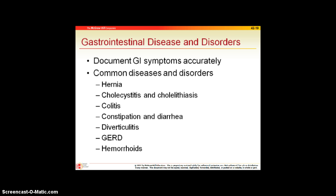Cholecystitis is inflammation of the gallbladder, while cholelithiasis refers to gallstones. Oftentimes treatment means removing the gallbladder, and we can live without one. Colitis is inflammation of the large intestine. Diverticulitis is inflammation of the large intestine caused by the autoimmune system — it is chronic, and patients often need to change their diet and have difficulty digesting certain foods.